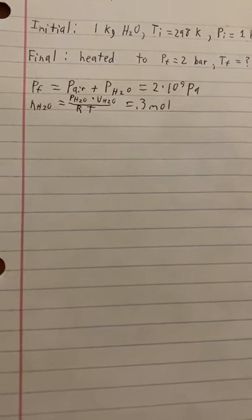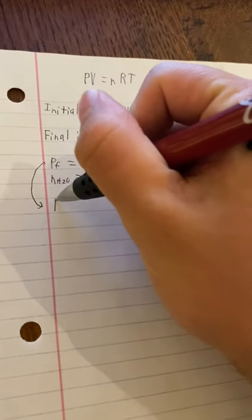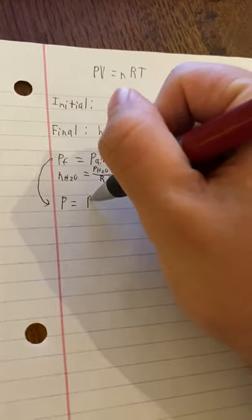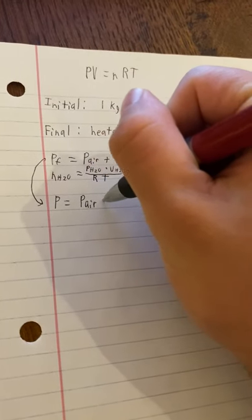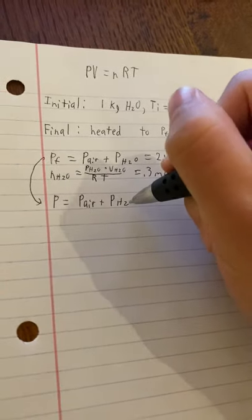So now we have two unknowns in these equations, essentially, which are the volume and temperature. So we need to figure out how to get these values. So I'm gonna move this equation down here so I have room to work. So pressure equals P air plus pressure of the water vapor.